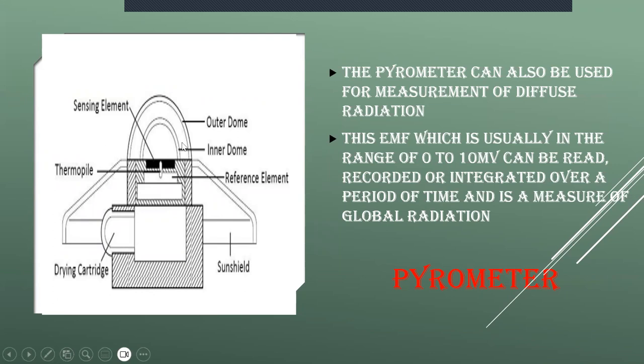It will calculate the radiation falling on the horizontal surface of the hemispherical field of view. The pyrometer is installed for measuring the global radiation. The pyrometer consists of a black surface. Here you can see a black coat. This surface heats up when it is exposed to the solar radiation. Its temperature increases until the rate of heat gained by the solar radiation equals the heat loss by convection, conduction, and radiation.